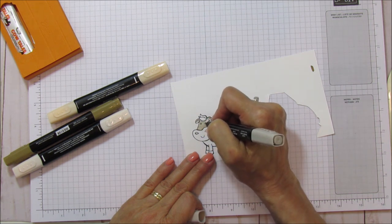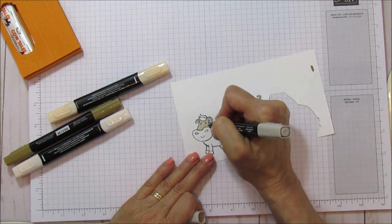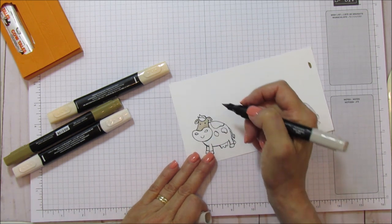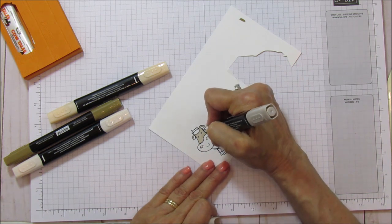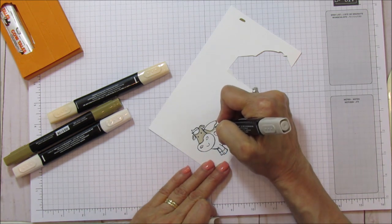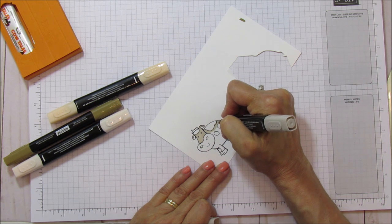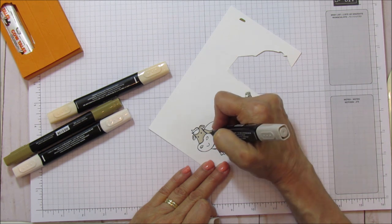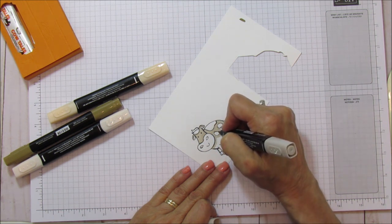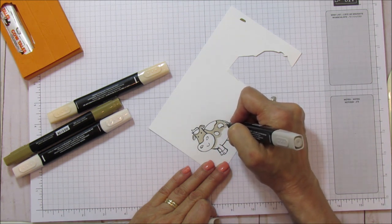You can make him a dairy cow. You can make him any kind of cow that you like, but we are going to just make him like a regular dairy cow. And I'm just quickly coloring. I'm not doing anything fancy here.